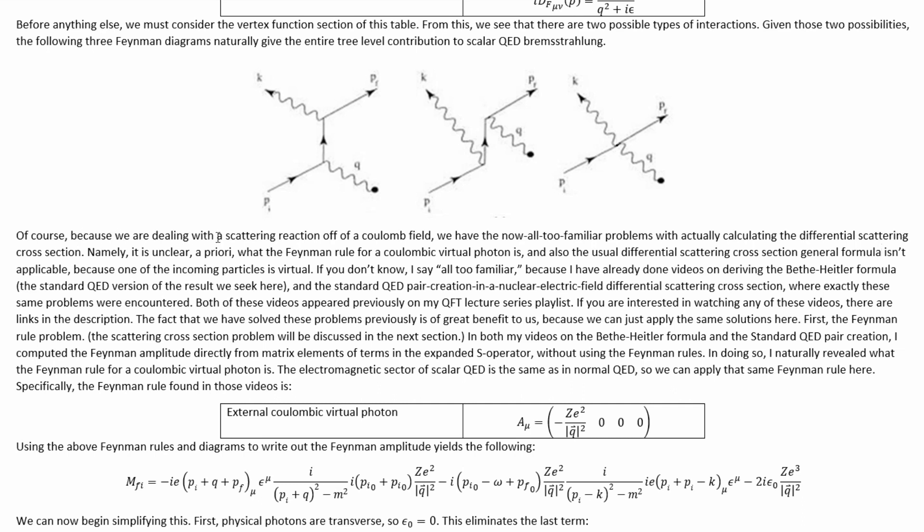Of course, because we are dealing with a scattering reaction off of a Coulomb field, we have the now all-too-familiar problems with actually calculating the differential scattering cross-section. Namely, it is unclear a priori what the Feynman rule for a Coulomb virtual photon is, and also the usual differential scattering cross-section general formula isn't applicable, because one of the incoming particles is virtual.